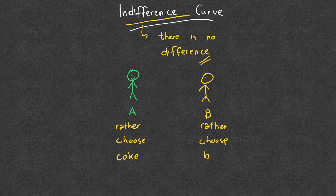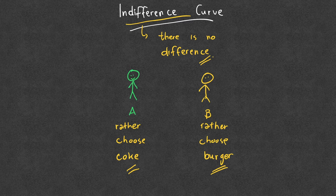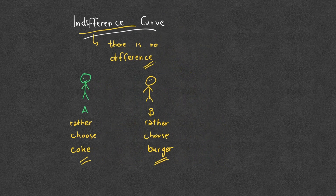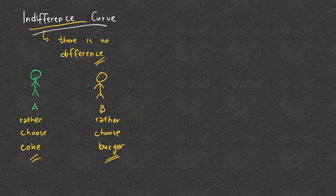And another individual, let's say B, would rather choose burger. Every person has preferences. This is why in neoclassical economics, everyone has their own preferences and the individual is the driver of economics. So let's put that here: indifference curve.